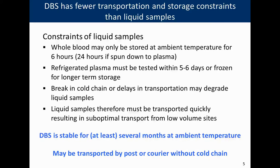DBS has a number of advantages over liquid samples in terms of transportation, storage, and sample collection. The constraints of liquid samples are that whole blood may only be stored at ambient temperatures for about six hours, or maximum 24 hours if spun down to plasma using a centrifuge — which requires laboratory infrastructure. Refrigerated plasma must be tested within five to six days, or otherwise needs to be frozen for longer-term storage. Any break in the cold chain or delays in transportation may degrade liquid samples and make them unfit for testing.